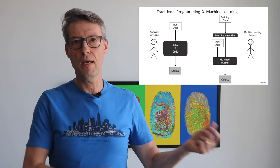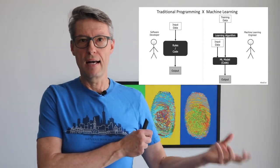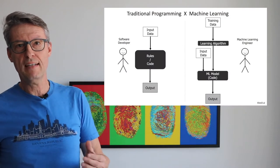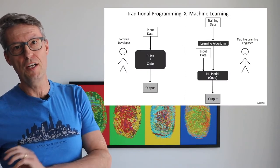You can see the difference: in traditional programming, software engineers write all the code, whereas in machine learning, a machine learning engineer chooses a learning algorithm that learns on top of training data and builds a new model. That model is then used with new data in production.